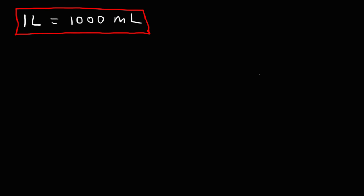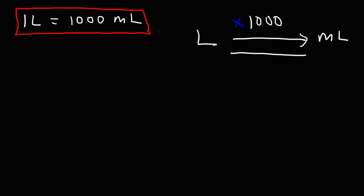Here's how you can quickly get your answer. If you have liters and you want to convert to milliliters, multiply the value by 1,000. To go backwards, if you have milliliters and you want to get liters, the opposite of multiplication is division — divide by 1,000. That's how you can quickly go from liters to milliliters or milliliters to liters.